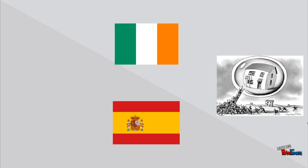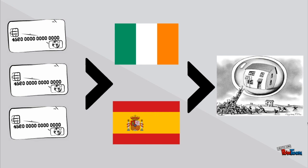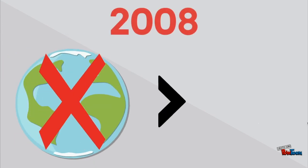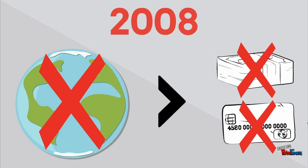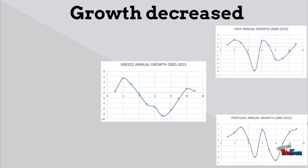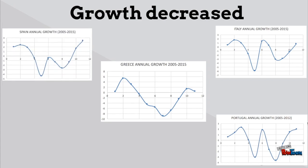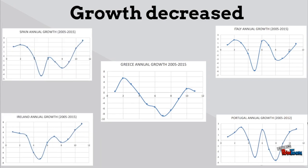Furthermore, a real estate bubble was created in Spain and Ireland because of the extremely low rates on credit that the population enjoyed. However, this only became a problem in 2008 when the world entered an economic recession phase. This meant that creditors all over the world were not interested in lending money for such a small price when they knew there was a high chance of countries not repaying. As a result, all economies that were based on borrowing collapsed, meaning that income decreased together with rising unemployment. Also, the real estate bubble in Ireland and Spain burst, leading to an economic crisis in both countries.